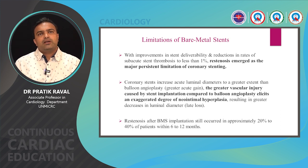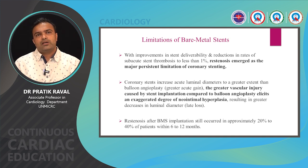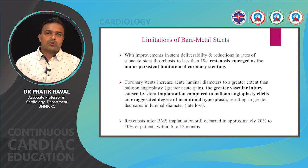With improvement in BMS design, stent deliverability and stent thrombosis rate improved significantly. However, restenosis emerged as the major persistent problem. Coronary stents increased luminal diameter acutely, but the metallic scaffold caused greater vascular injury compared to balloon angioplasty alone, leading to an exaggerated degree of neointimal hyperplasia, late luminal loss, and subsequent restenosis. The restenosis rate after BMS implantation was as high as 20 to 40% over 6 to 12 months.